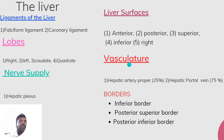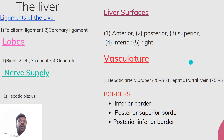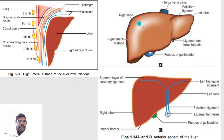The liver has five surfaces: anterior surface, posterior surface, superior surface, inferior surface, and right surface. Discussing the anterior surface — it is triangular in shape. Through this surface, the liver is subdivided into anatomical right and left lobes by the attachment of the falciform ligament.